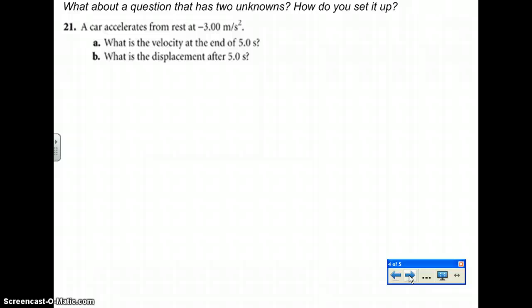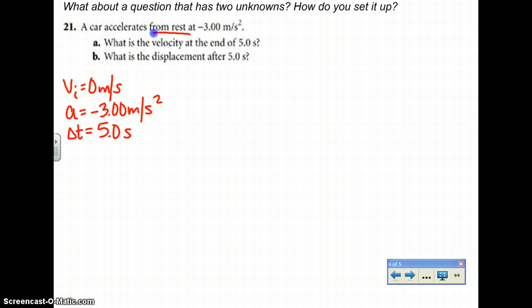First calculate the velocity after 5.0 seconds, and then the displacement after 5.0 seconds. Question 21, if it says it starts from rest, what is your initial velocity? Zero meters per second. It doesn't matter if it's zero or 0.0 or 0.00. They all have no sig figs. The next thing that you know is that you have an acceleration of negative 3.00 meters per second squared. The next thing is your time is going to be 5.0 seconds. Make sure you add that zero or else you just knocked yourself down to one sig fig.